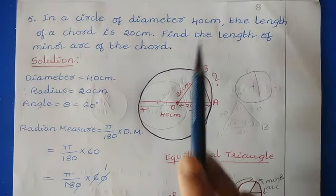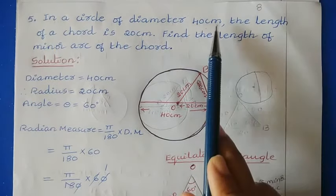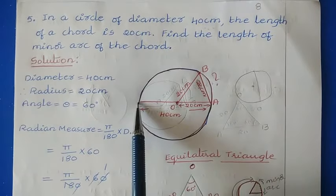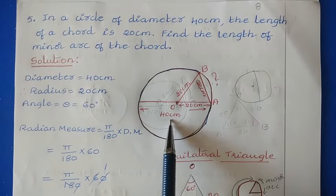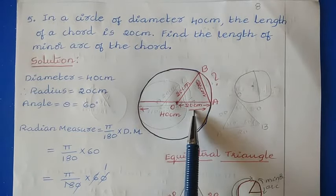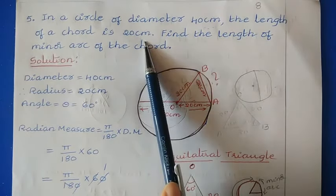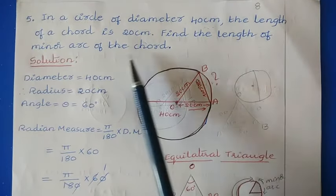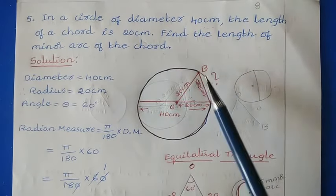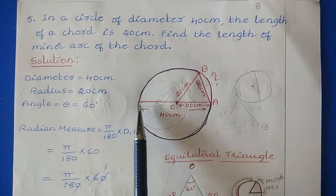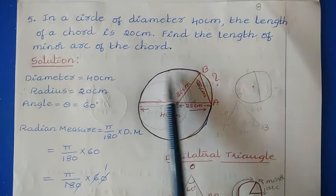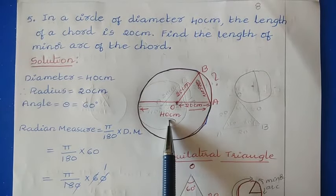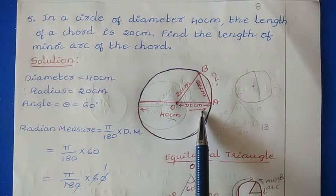They have given the diameter as 40 cm. Since radius is half the diameter, radius = 20 cm. The length of the chord is 20 cm. We need to find the length of the minor arc. The diameter is 40 cm, so radius r = 20 cm.